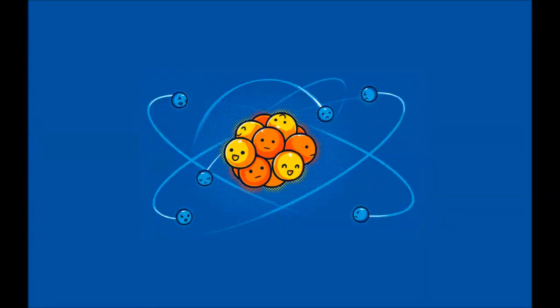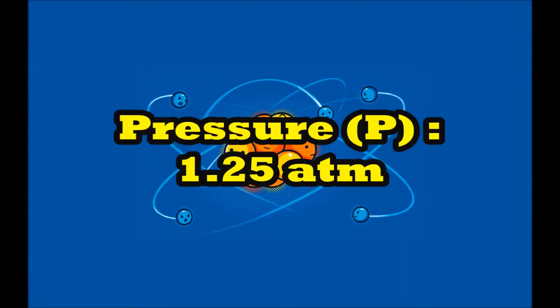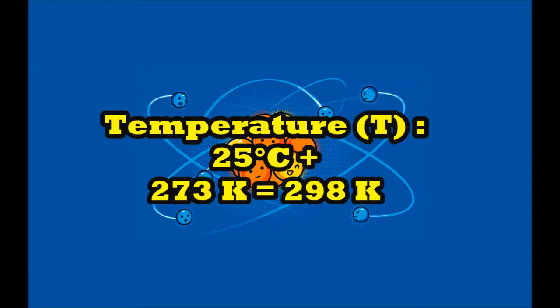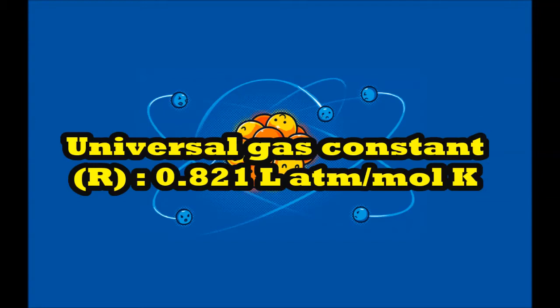To solve the problem, the first thing you will do is find the given values. P is equal to 1.25 atm. N is equal to 0.50 mol. T is equal to 25 degrees Celsius, but you need to convert it into Kelvin. To convert it, just add 273 Kelvin to the given temperature. So now our temperature is 298 Kelvin. R is equal to 0.0821 liter·atm/mol·Kelvin.